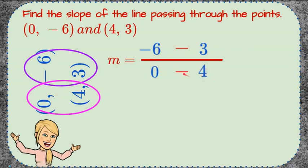Now we're going to rewrite this and we are going to add the opposite. So negative 6 add negative 3, 0 add negative 4, and now we can add.